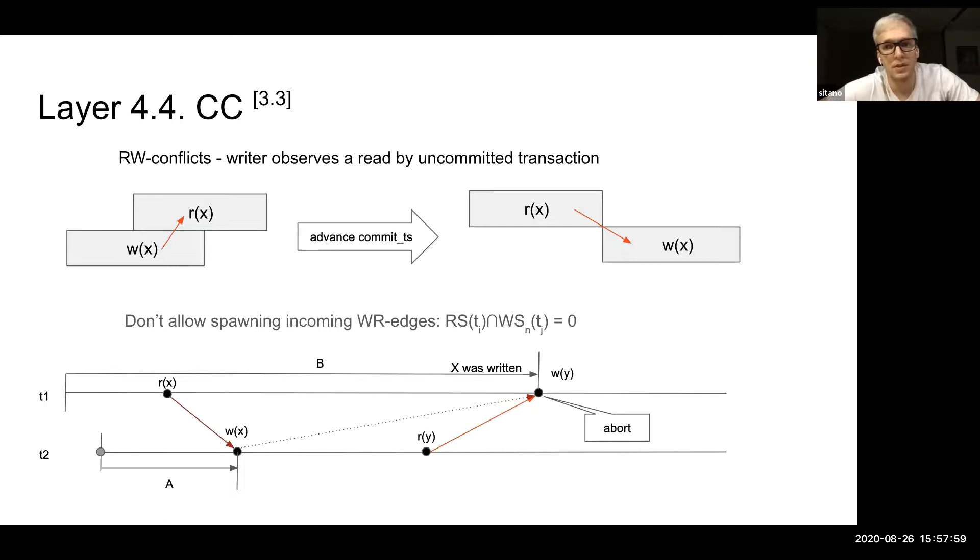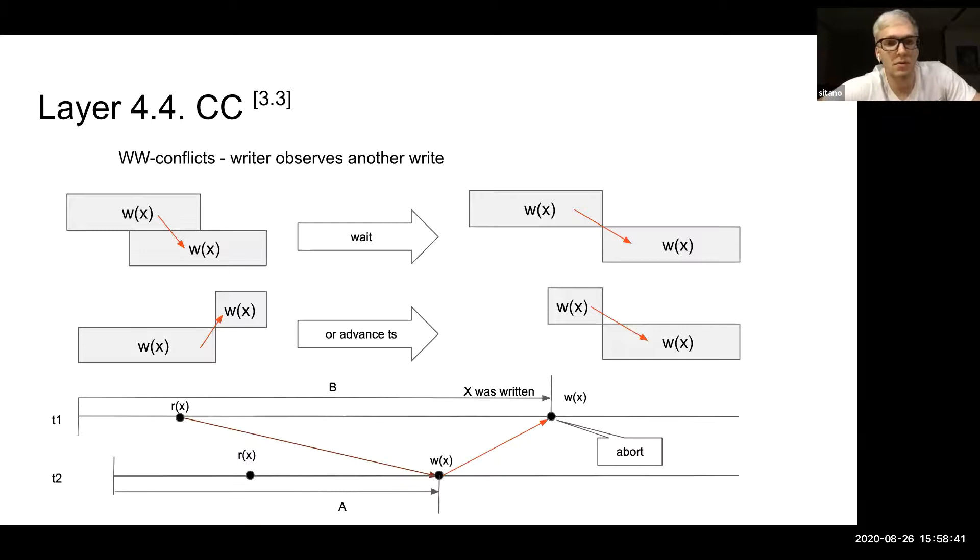The most interesting part is read-write conflicts. It's a situation when the writer observes a read by a non-committed transaction. The only thing it can do in that case is to advance the commit time of the transaction to ensure that the direction of the conflict edge is correct. On the bottom there is an example of how it prevents the serializability violation. If you want, we can talk about it a bit later after I finish the presentation.